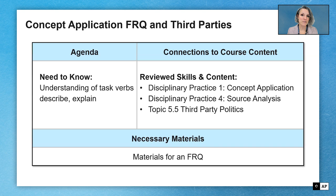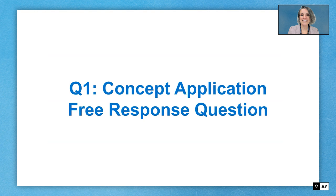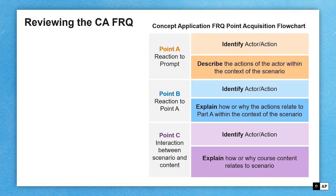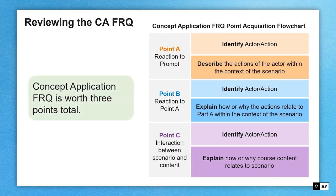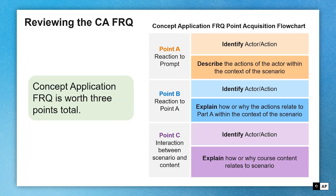Go ahead and grab paper and pencil to follow along and practice as we go through this FRQ sample. The concept application FRQ is going to be the very first FRQ you'll run across on your AP exam, and you have 20 minutes to accomplish this task. It's worth three points — there are three points across it, and you have three task verbs with specific material you have to accomplish for each of them.